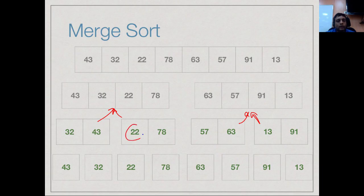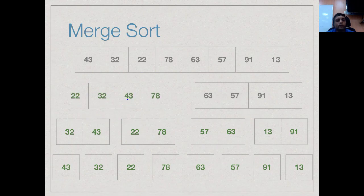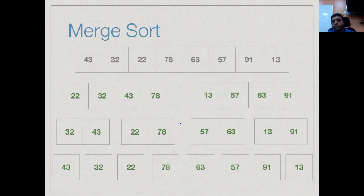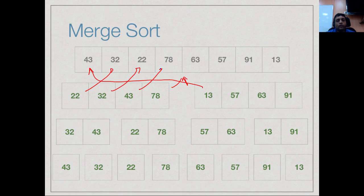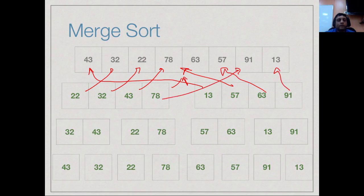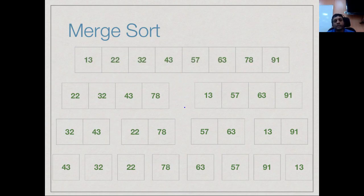We apply merging to produce sorted segments of length four. The first merge gives 22, 32, 43, 78. The second merge gives 13, 57, 63, 91. Finally, we merge these two sub-arrays of size four: 13 comes first, then 22, 32, 43, 57, 63, 78, and 91. Merging the two sub-arrays of size four gives the final sorted answer. This is how merge sort works: break into two parts, recursively sort each part using the same strategy, and merge them.